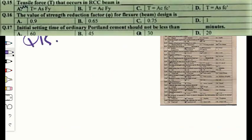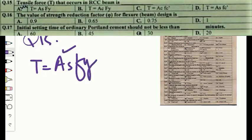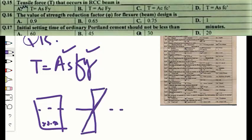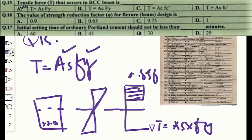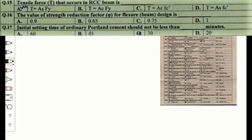Question number fifteen: the tensile force in RCC steel is equal to As × fy, where As is the area of steel and fy is the yield strength of steel. Considering a beam section, the tension in the steel is As × fy, while the compression in the concrete is 0.85 × f'c × a, where a is the depth of the stress block. The correct option is A — As × fy.